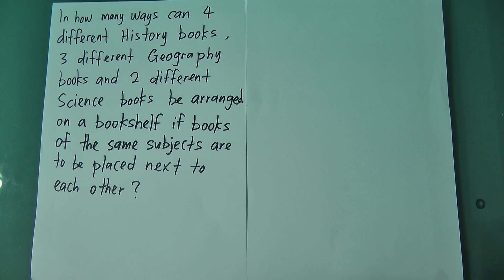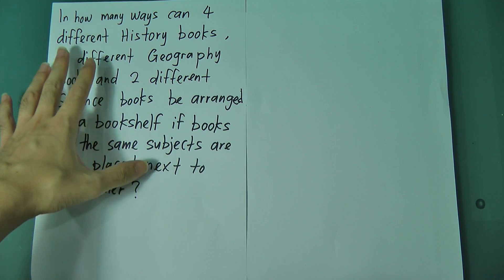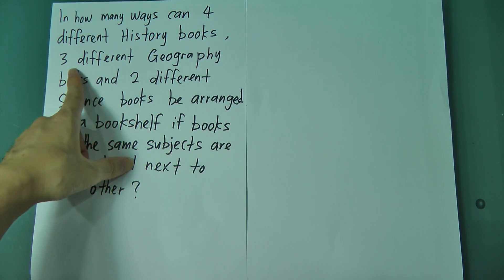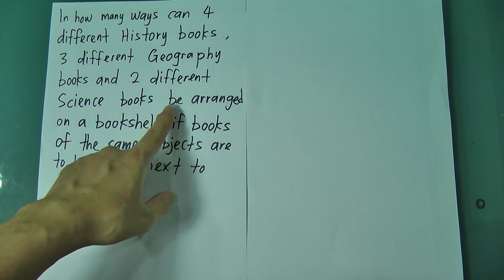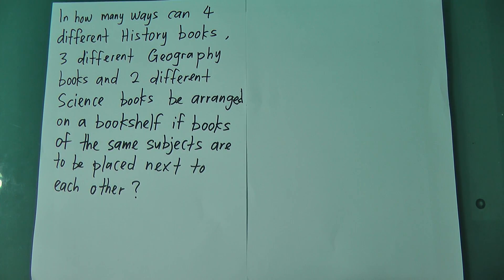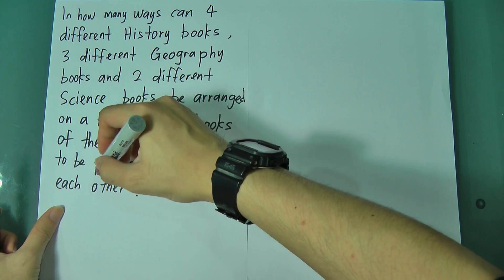In this video, I'm going to explain one of the famous questions about permutation and combination. This question was asked by one of my online students who sent a personal message to my Facebook. The question says: in how many ways can 4 different history books, 3 different geography books, and 2 different science books be arranged on a bookshelf if the books of the same subjects are to be placed next to each other?